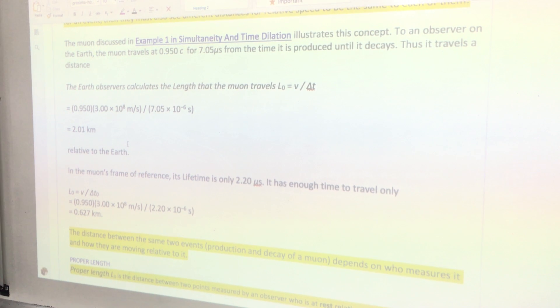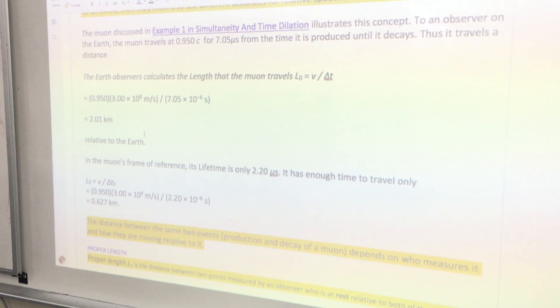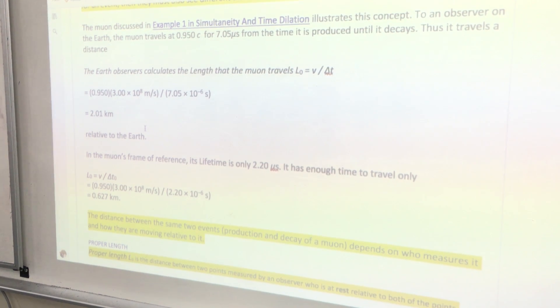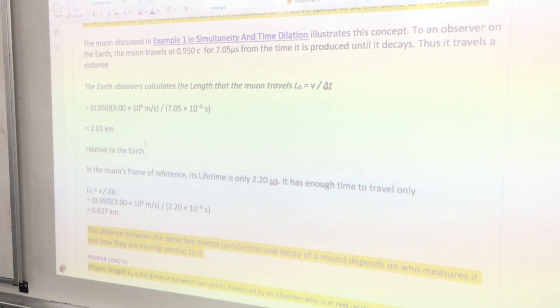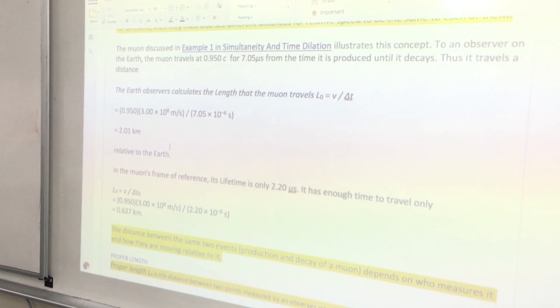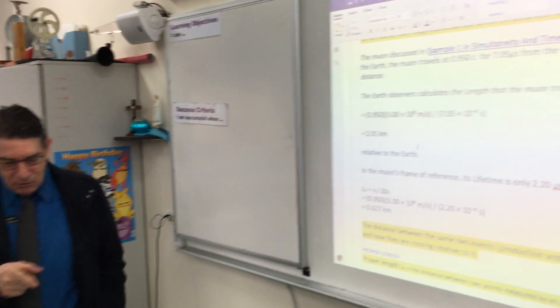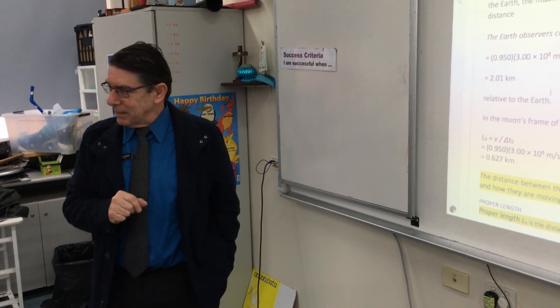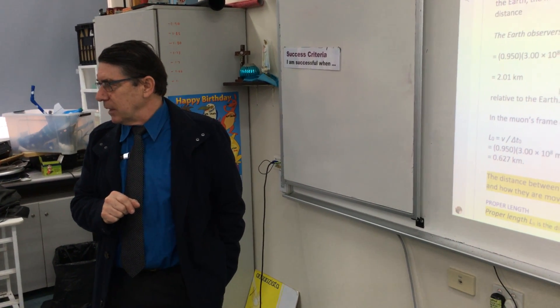If you go and hop on the muon's frame of reference and you measure that, we discussed the day before that the muon considers its lifespan or its half-life value of 2.2 microseconds. And during that 2.2 microseconds, it has enough time to travel at 0.95 the speed of light, 627 metres, 0.627 kilometres.